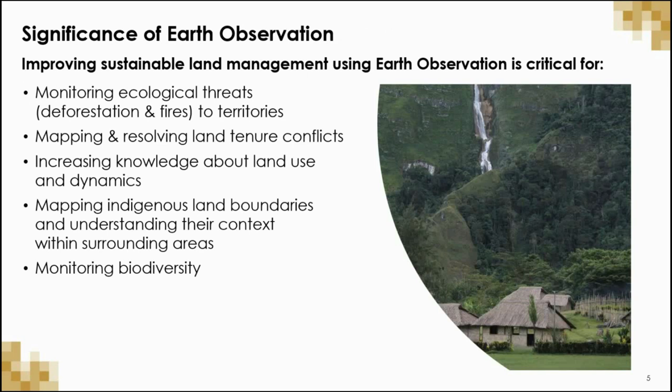Because of the unique qualities and flexibility of Earth Observation, it has much utility in supporting sustainable land management and can be critical for ecological threats to territories in terms of deforestation, fires, etc., for the mapping and in helping to resolve land tenure conflicts, for increasing knowledge of land use dynamics, for mapping indigenous land boundaries and understanding their context within surrounding areas, and for monitoring biodiversity.